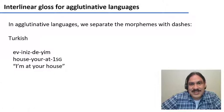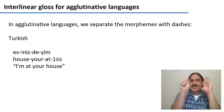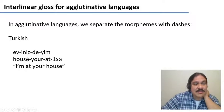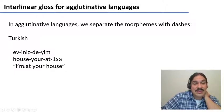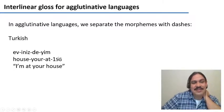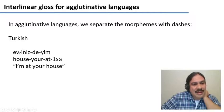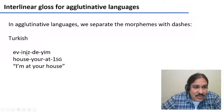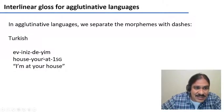For agglutinative languages, we separate the morphemes with dashes so that we know what each of the morphemes means. For example, this is a single word in Turkish: 'evinizdeyim.' The whole word means 'I'm at your house,' and the word has four morphemes. 'Ev' is the root — it means house. Then several suffixes: 'iniz' means your, 'de' means at, and 'yim' means I am. So: house, your, at, I — I'm at your house. We can clearly see what each of the morphemes mean because they're all separated with a dash, both in the first line and in the second line.